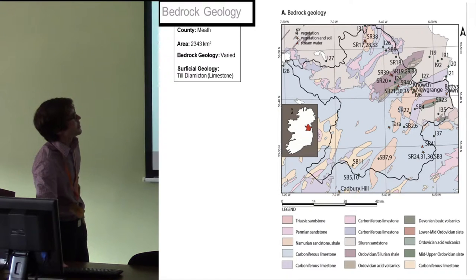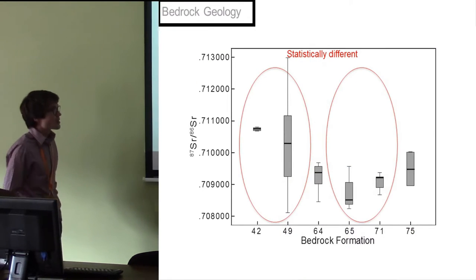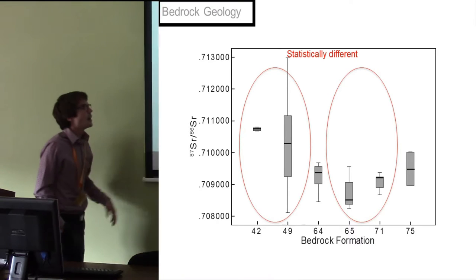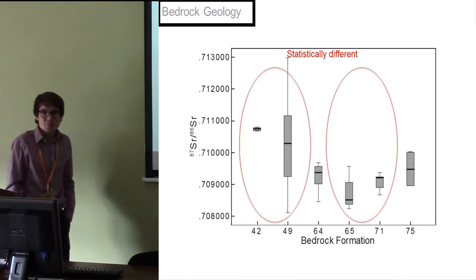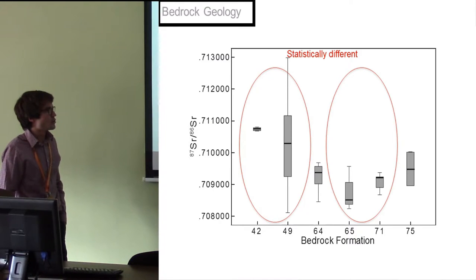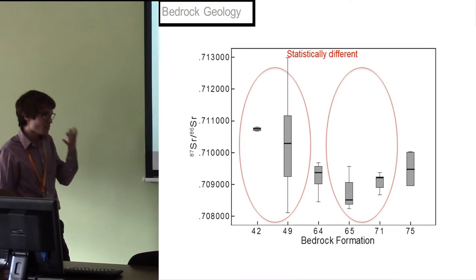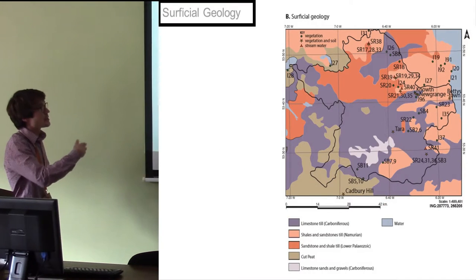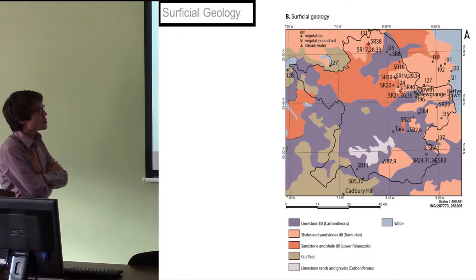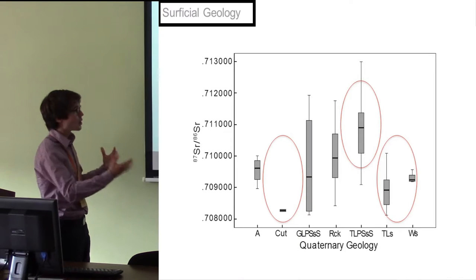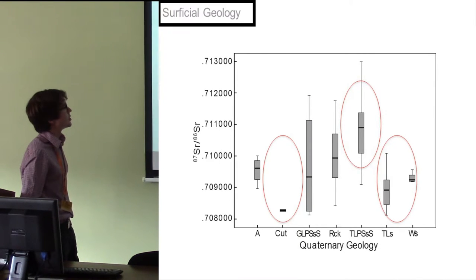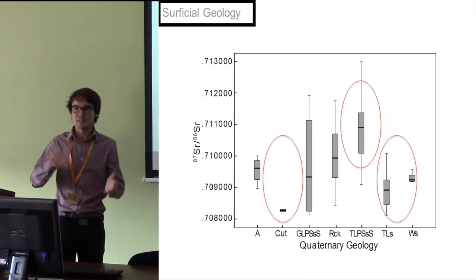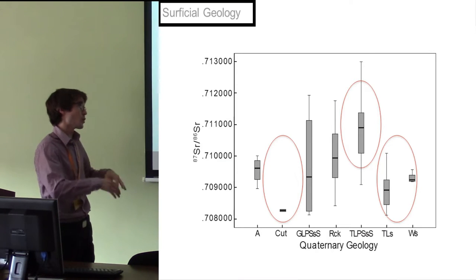If we look at the isotope results for each bedrock formation, we see lower strontium values for at least two formations and higher for others when they are statistically different. The bedrock has an impact on the strontium isotope ratio measured in plants. But that's not the whole story — here is the same map showing the superficial geology, and again we've got differences between the different geological units. So not only does the bedrock have an impact, but also the superficial geology, which is kind of to be expected — it's a combination of what's coming from the bedrock and what's on top of it.